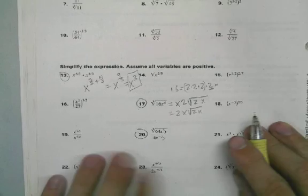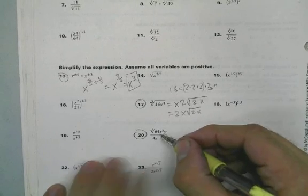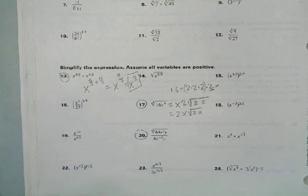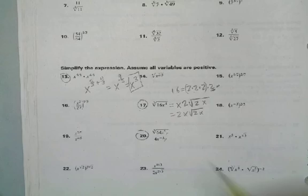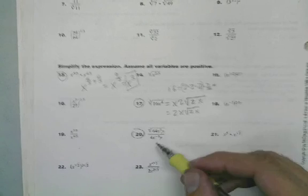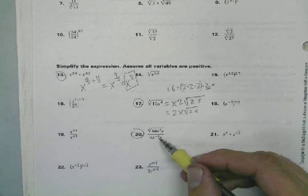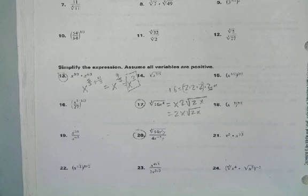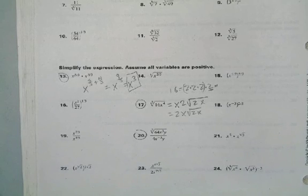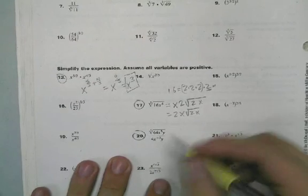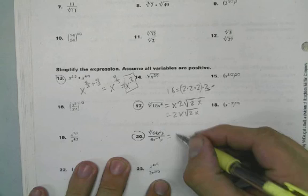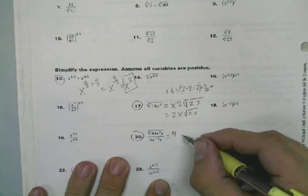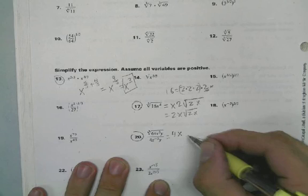I like doing these ones over here. Maybe I'll do one more of these. Let's take this one. 64, what's the cube root of 64? And we have x cubed and y, and we have 4x^(-3). So x jumps up and the y stays down.